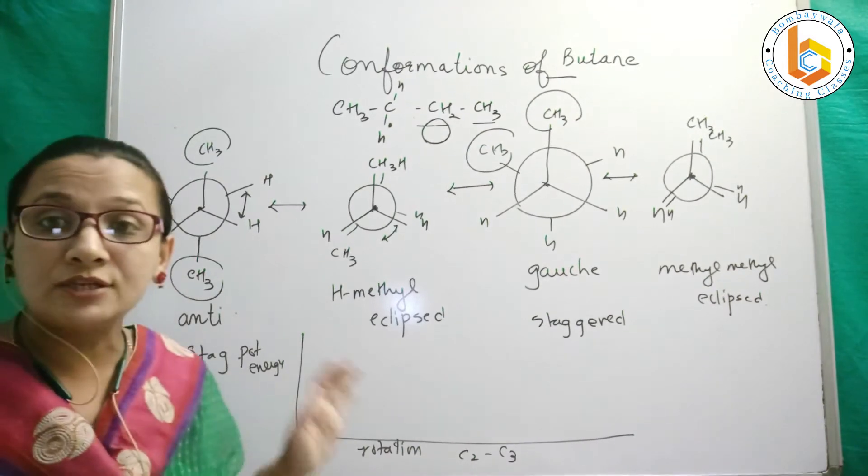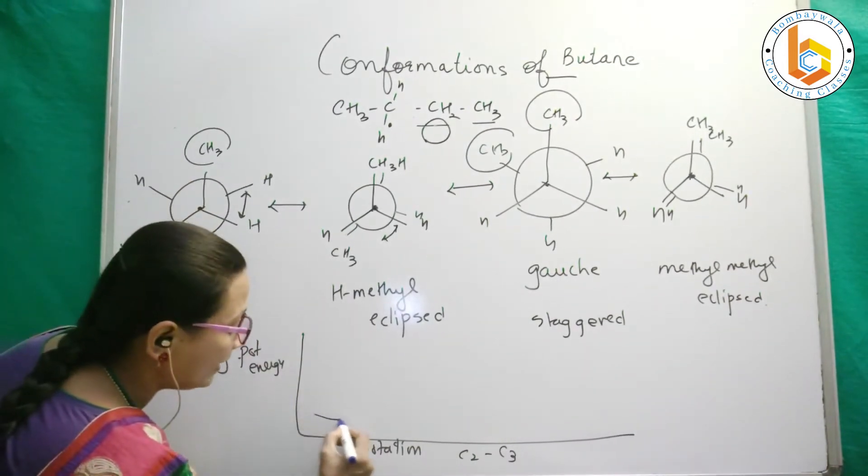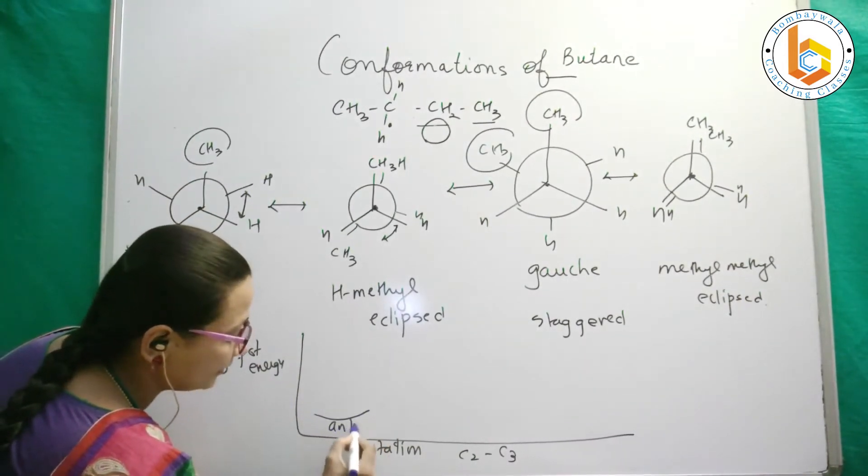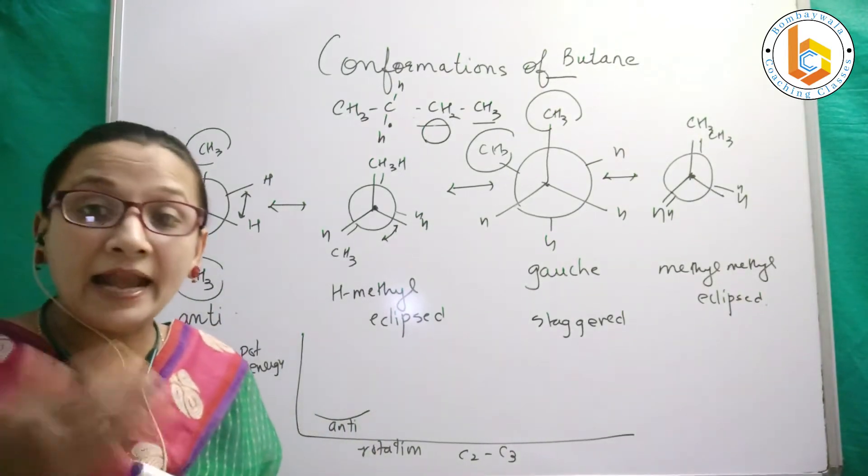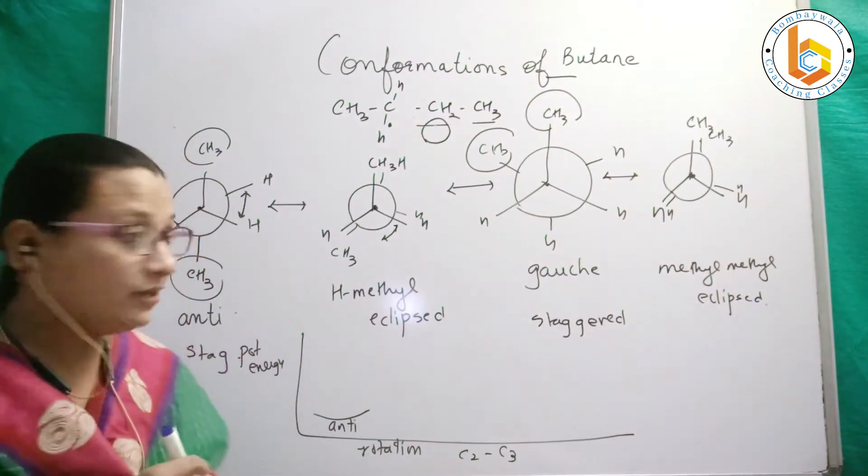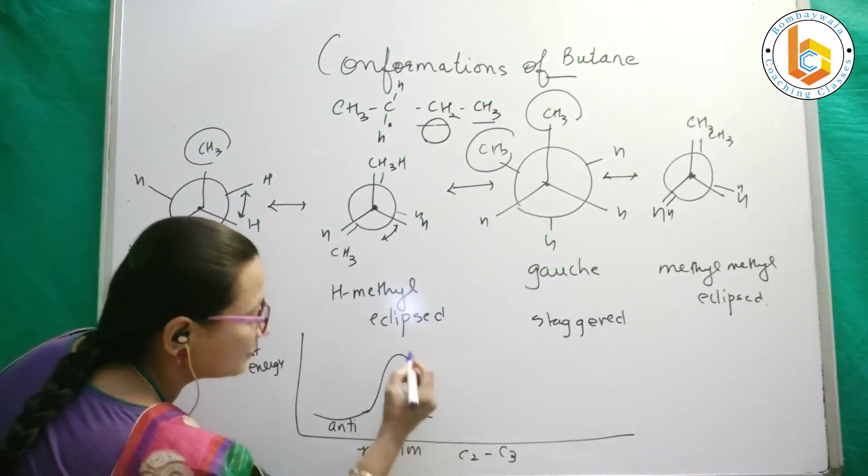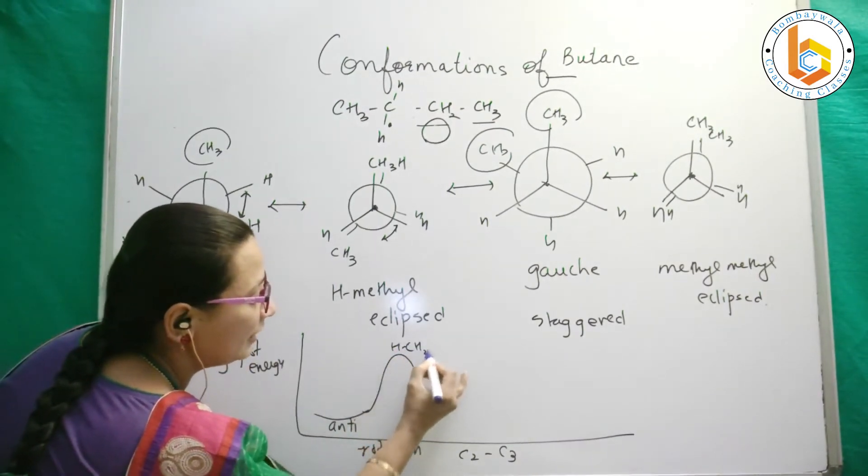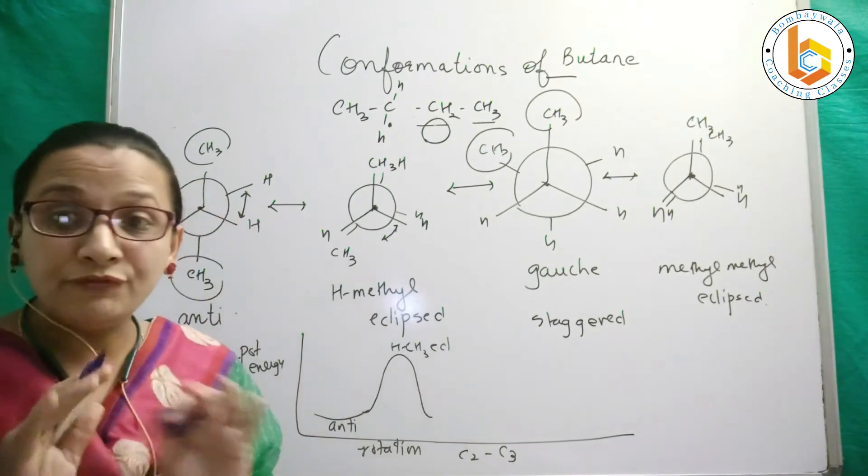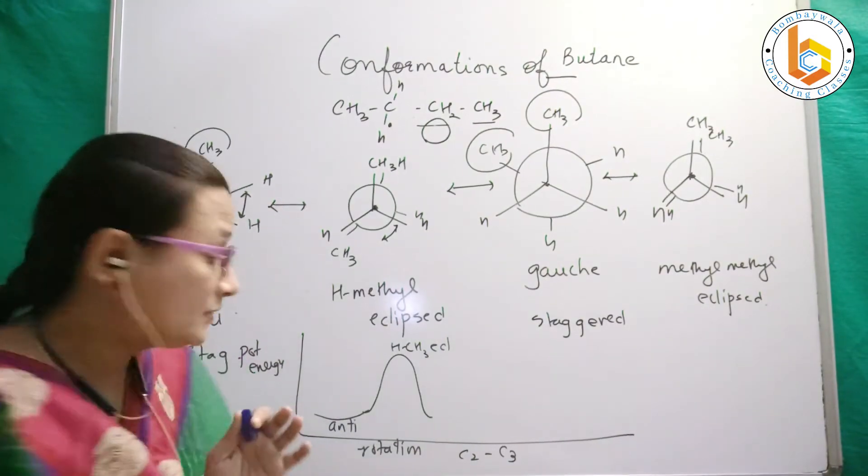So this will be anti. Then anti will take in energy and become less stable: hydrogen methyl eclipsed. The difference between staggered and eclipsed is around 3.5 kilocalories.